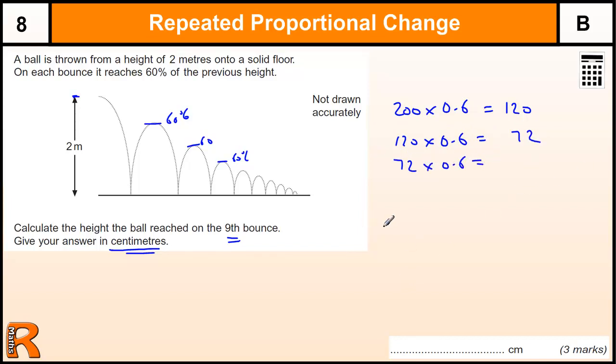But there is no need for that because what we are doing here is we are times by 0.6 each time. So we have got 200 times by 0.6 and we are doing that 9 times. So we are raising that 0.6 to the power of 9.